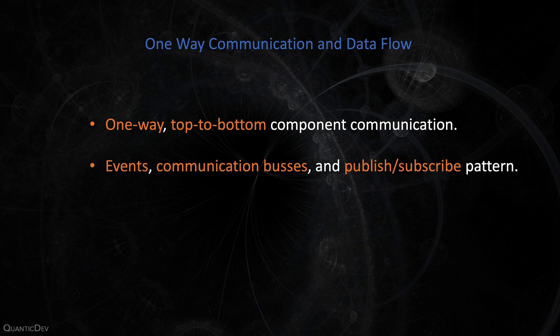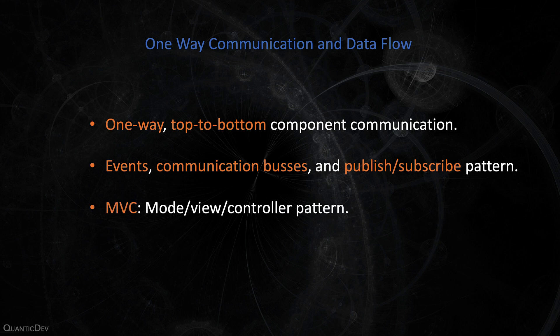You can utilize events, communication buses, and the publish-subscribe pattern to ensure orderly communication between components and layers of your program. For instance, the model-view-controller pattern is a good user interface data flow pattern. The controller produces some data, it gets encapsulated by model objects, and the view components render those data models in a nice UI — all the while the data flows one way. When the user clicks a button, it raises an event, the controller handles that event, and the data flow starts all over again.